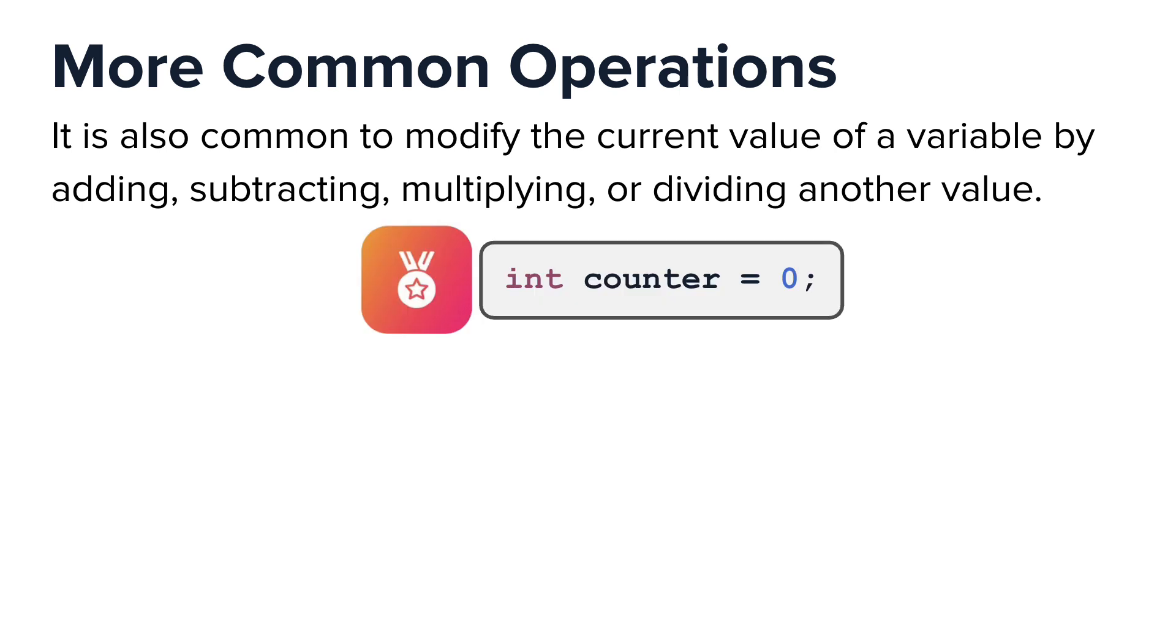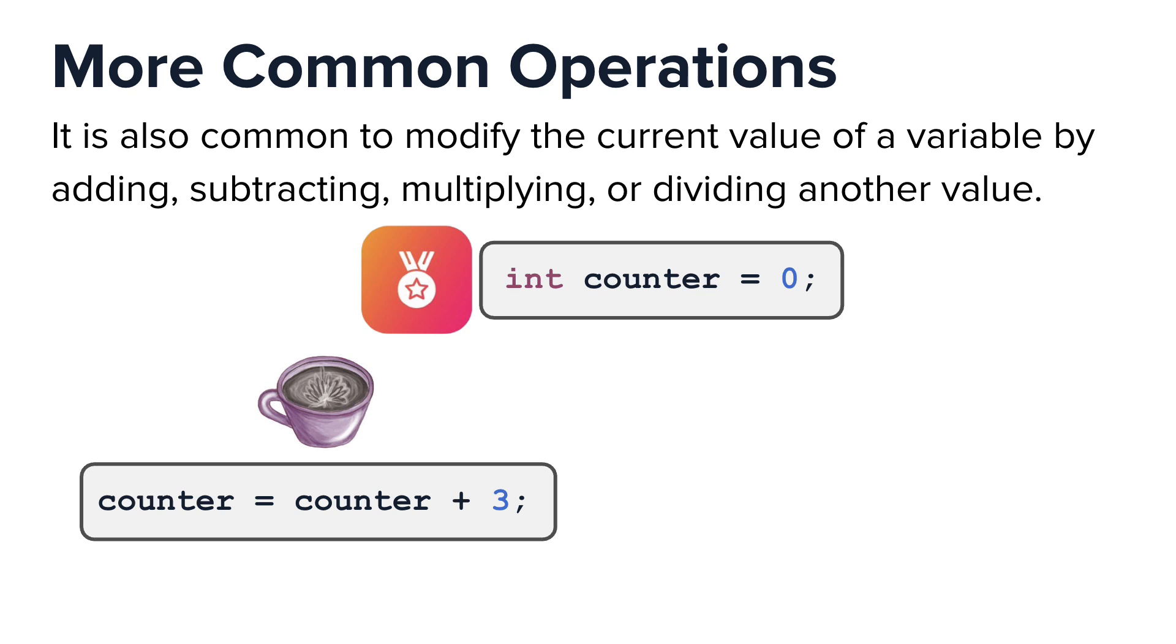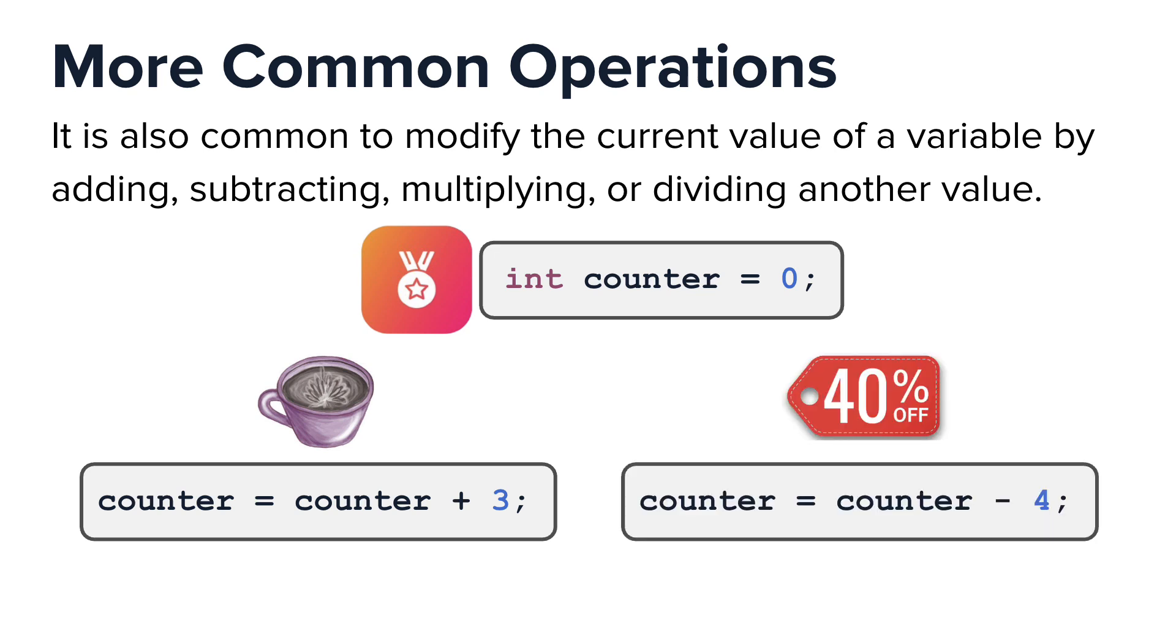Going back to our coffee shop rewards example, perhaps you want to make the program more versatile. If the customer buys a certain type of coffee, you increase the rewards counter by 3. And if the customer chooses a higher discount, say 40%, you decrease the customer's rewards counter by 4.